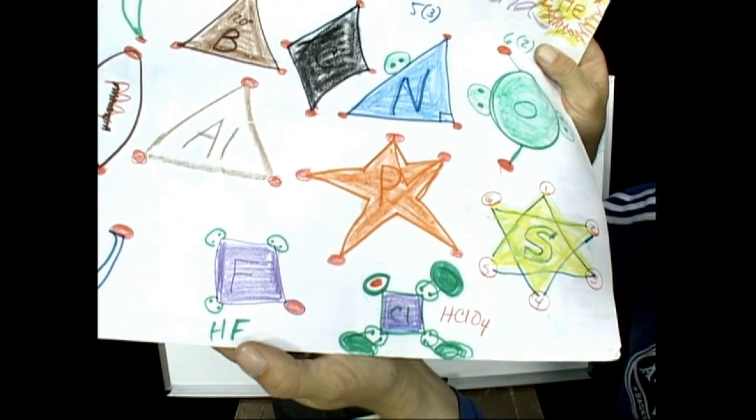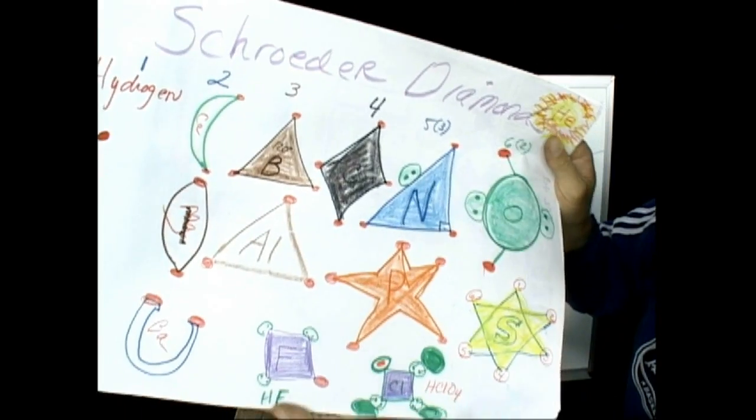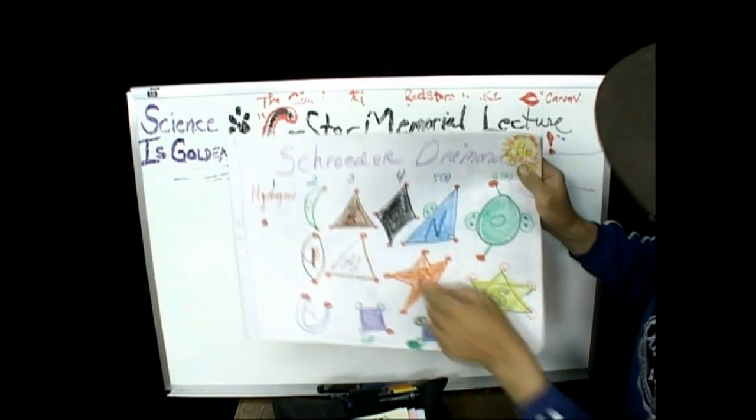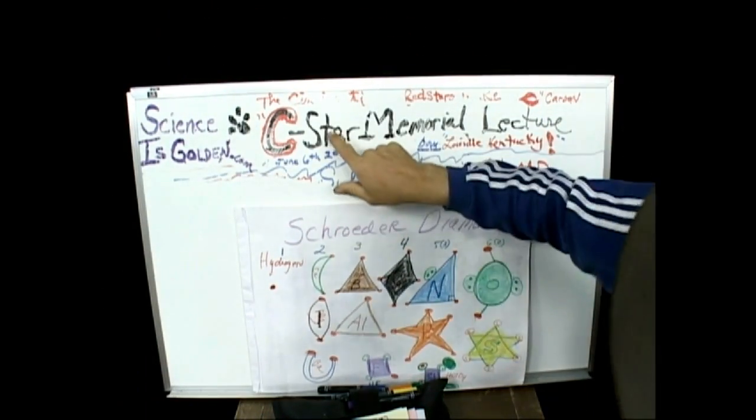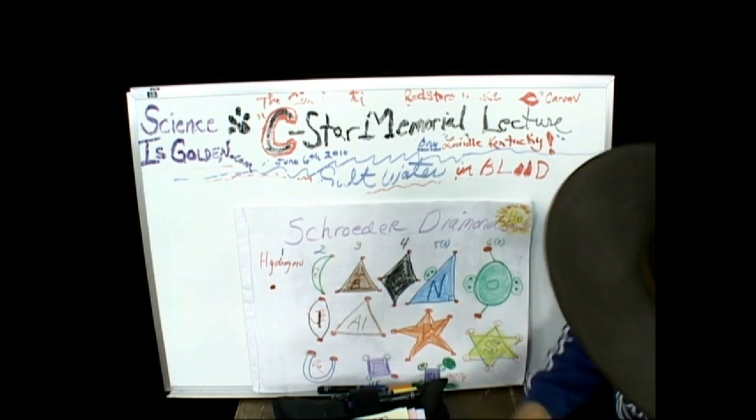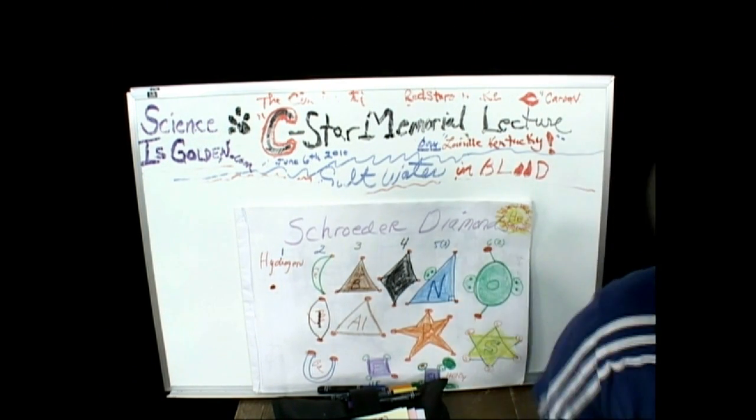Sulfates, sulfates are the next ones, and the Schroeder diamond is the technique we're using. And again, this is in memory of the sea star. She died on June 6th. Best Siberian Husky.